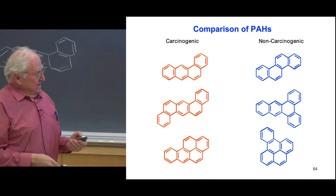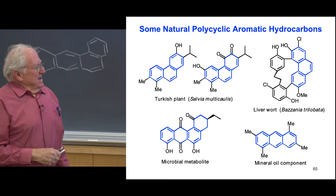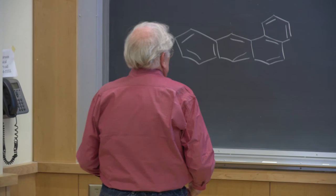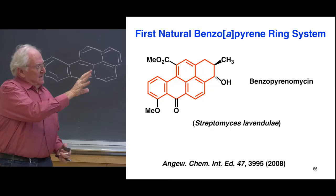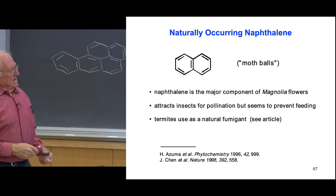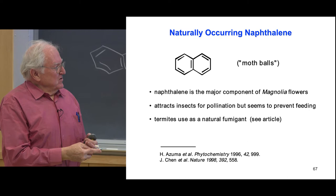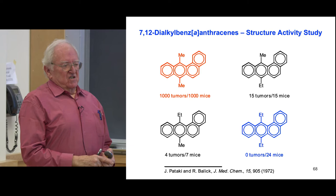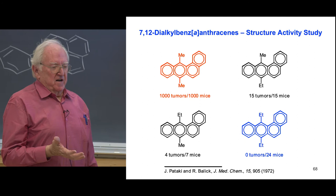Nature makes a lot of these compounds — polycyclic aromatic hydrocarbons found in plants and bacteria all have oxygens around the ring, and that actually prevents them from causing cancer. Naphthalene is not a carcinogen. It occurs naturally — it's produced by termites to repel ants, is a component of magnolia flowers, and attracts insects for pollination but not for feeding. The most carcinogenic polycyclic aromatic hydrocarbon is fortunately not formed when you burn things — it never fails to induce cancer in an animal. A thousand mice given this compound: all 1,000 developed cancer.